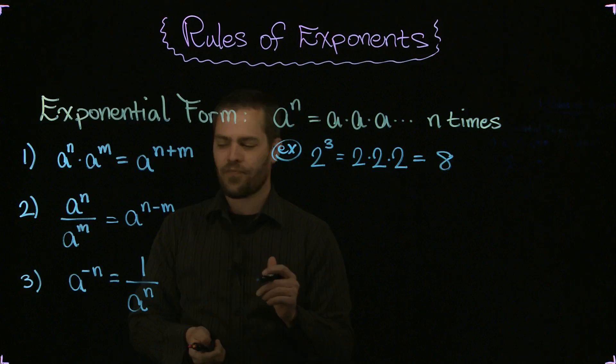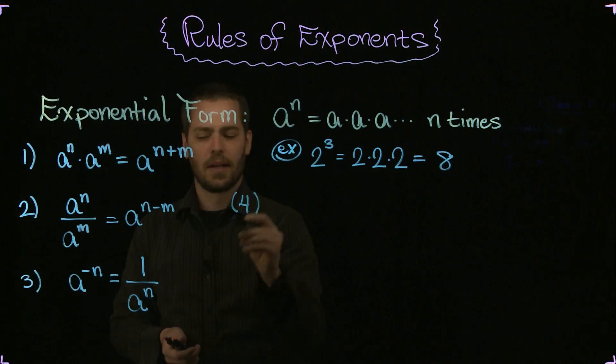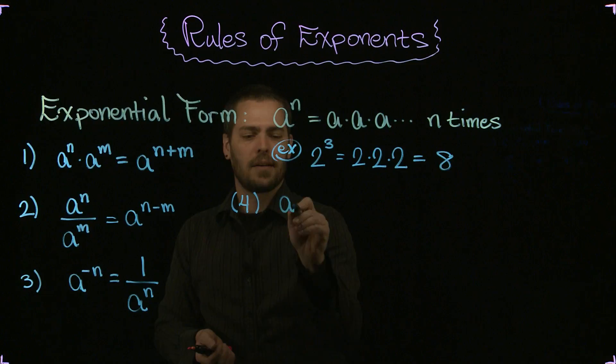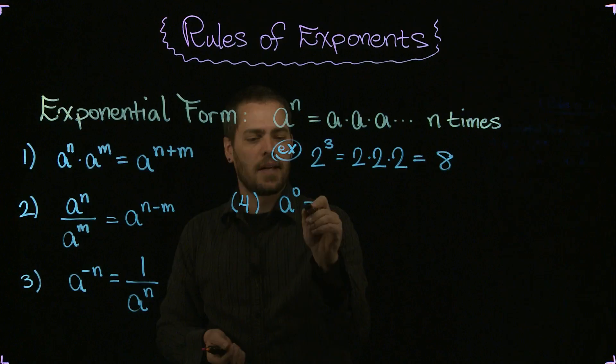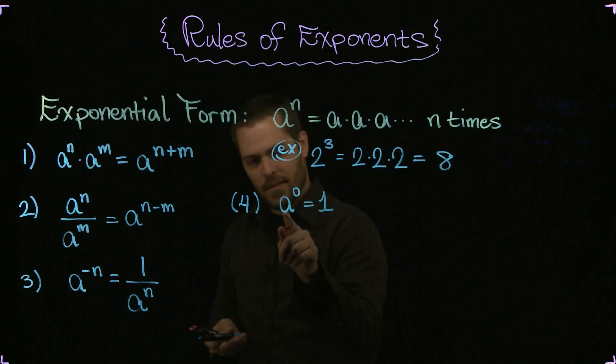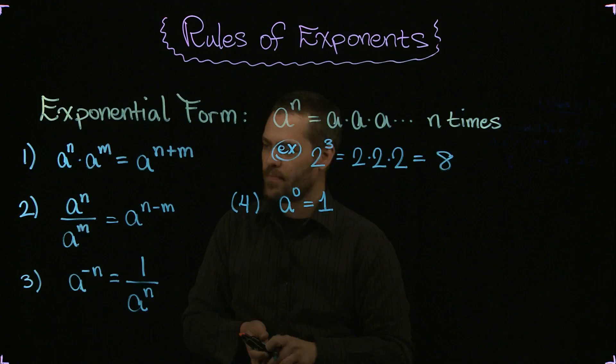Rule number four. As a consequence to this, we could say that a to the zero power, or a consequence to this one, a to the zero power is equal to one. And that's another interesting one. Anything to the zero power is equal to one. And that comes directly from, I would say this is the easiest way to take a look at it.